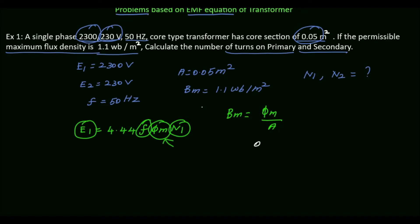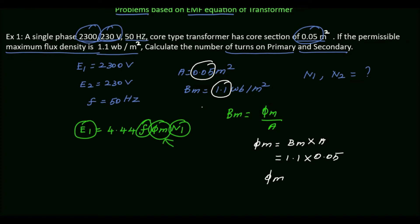From the flux density formula, maximum flux φM = BM × A. The maximum flux density is 1.1 and the area is 0.05, so φM = 1.1 × 0.05 = 0.055 Weber. This is our maximum flux.